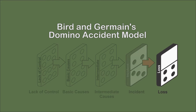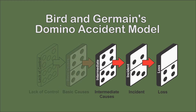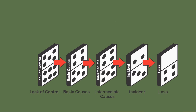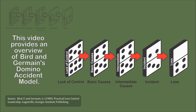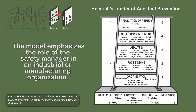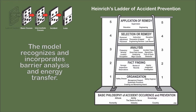The domino accident model developed by Byrd and Germain is in the lineage of the model developed by Heinrich in the 1920s, who is considered the father of the safety management field. The model has gained some usage in the recreation, parks, and outdoor fields. The purpose of this video is to provide a basic overview of their accident model. Viewers will note that their model emphasizes industry and manufacturing and the role of the safety manager in providing a safe work environment within the organization. Their model is also consistent with other prominent accident models.